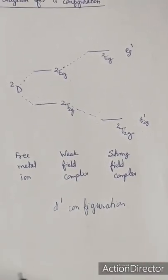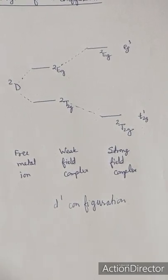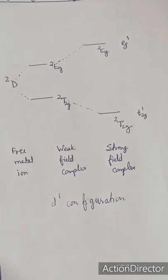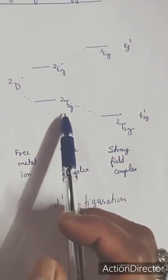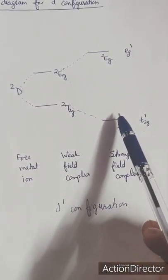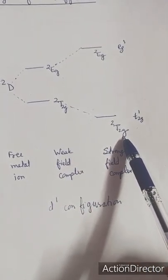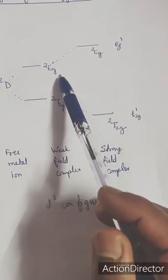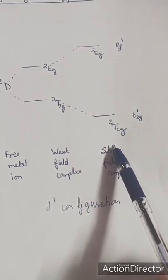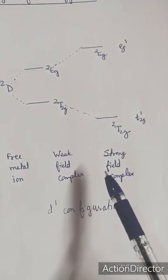There are necessary conditions for drawing a correlation diagram. The first condition is that the total number of electronic energy levels should be the same on both sides — for the weak field complex as well as for the strong field complex. In this case, at the left side for the weak field complex there are two energy levels, t2g and eg, and at the extreme right for the strong field complex there are also two energy states of the same type.